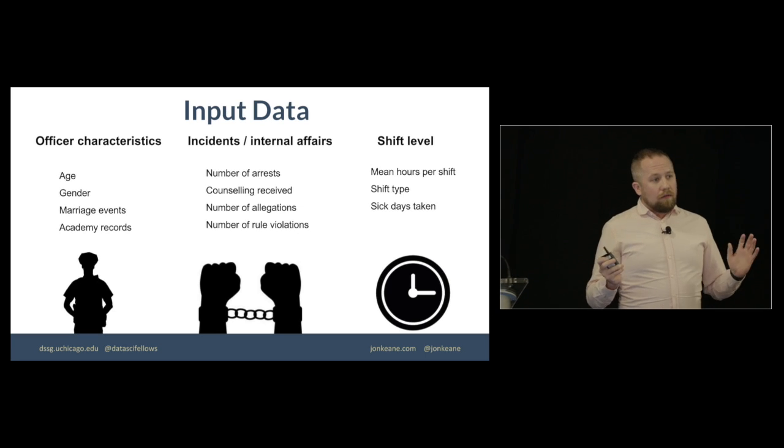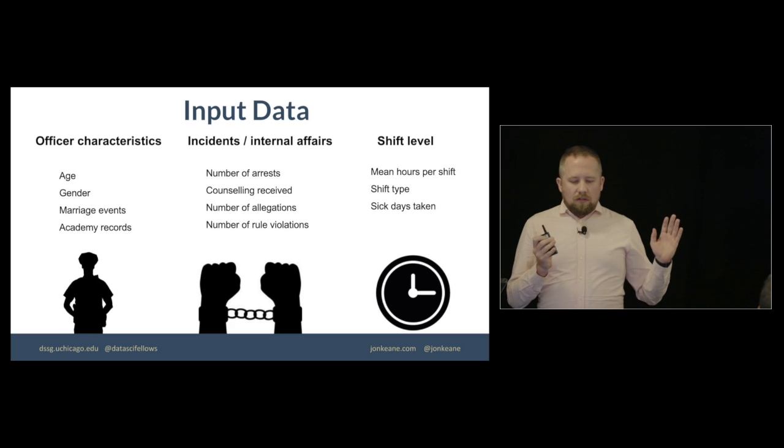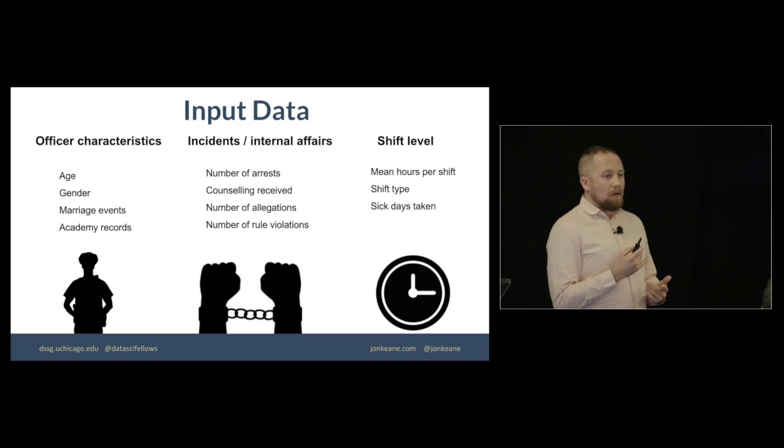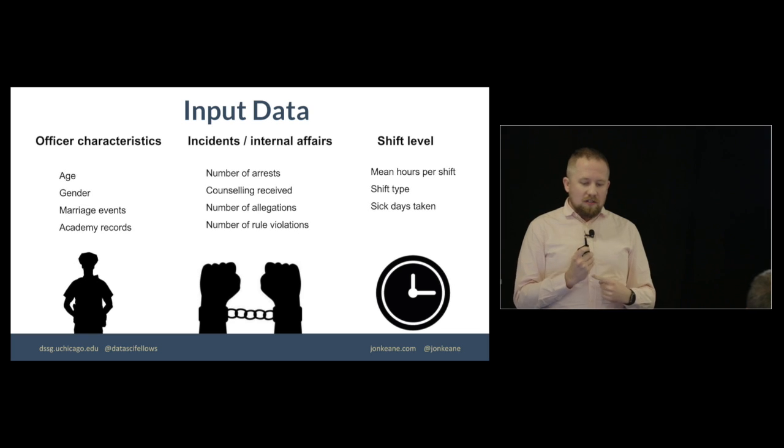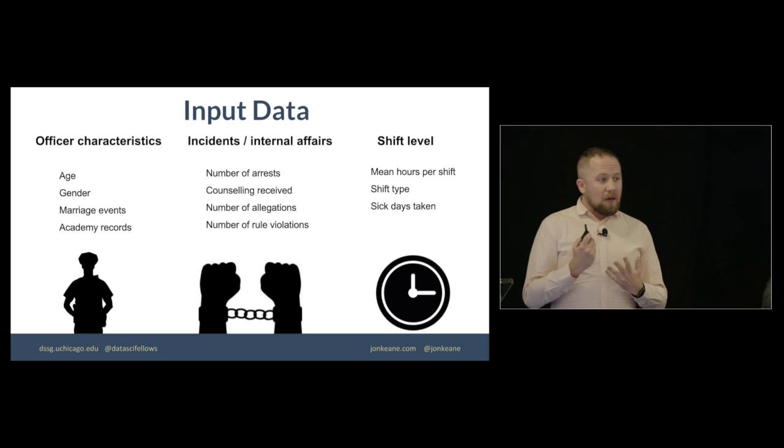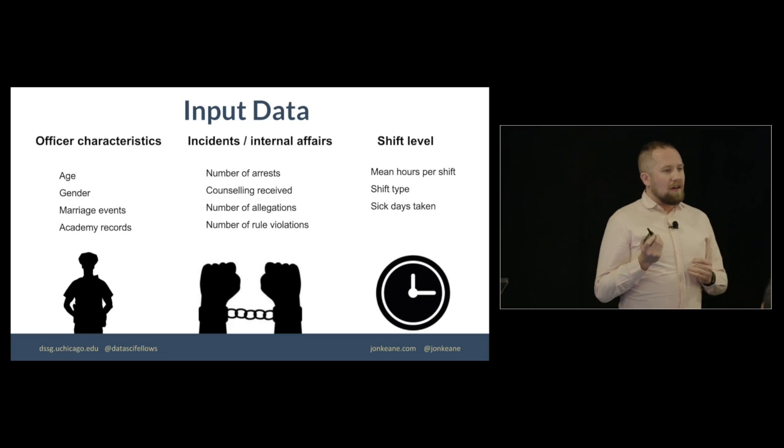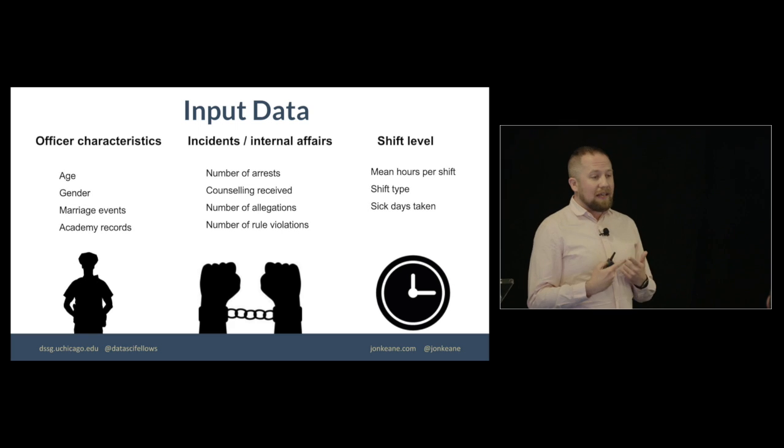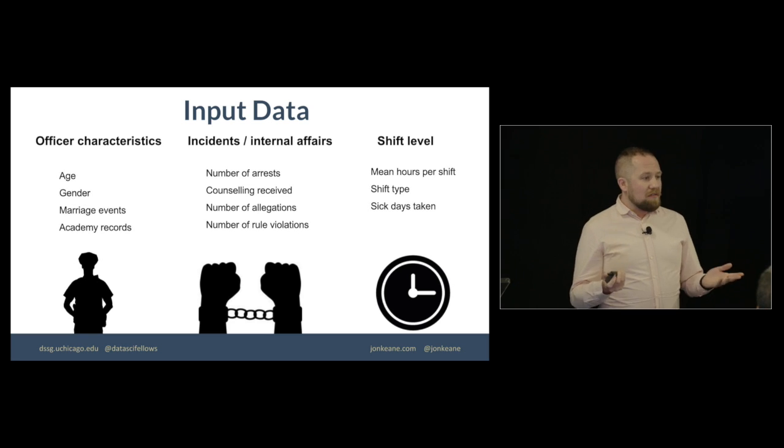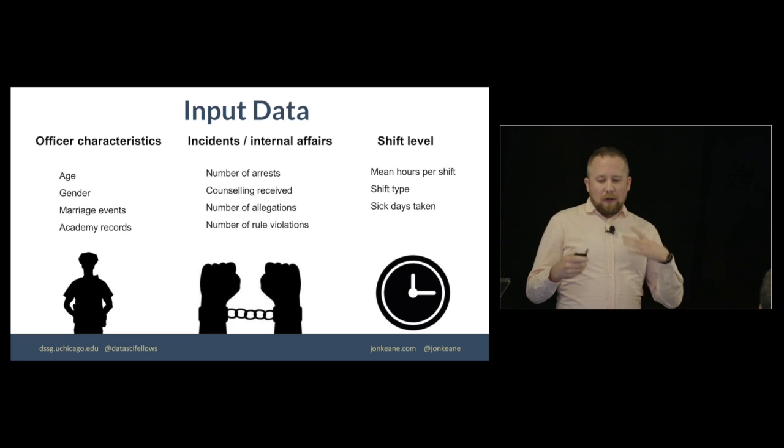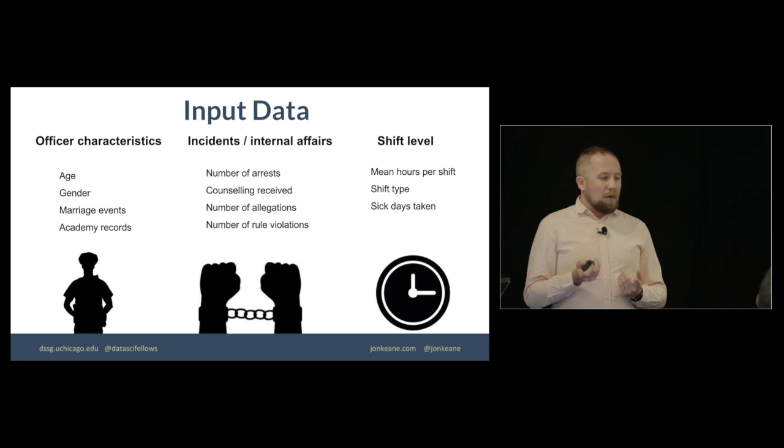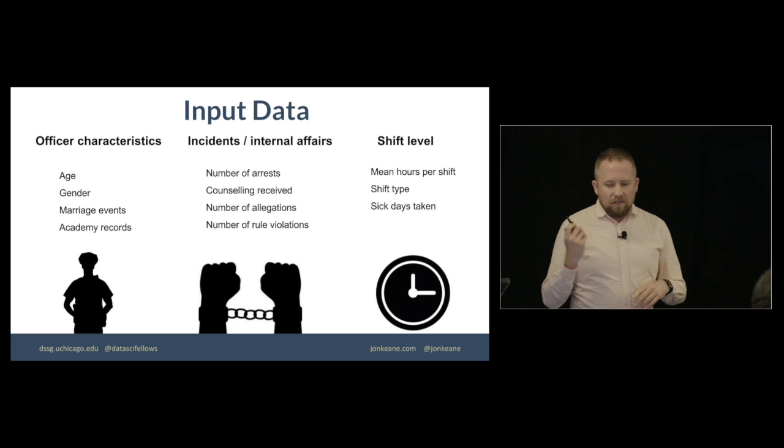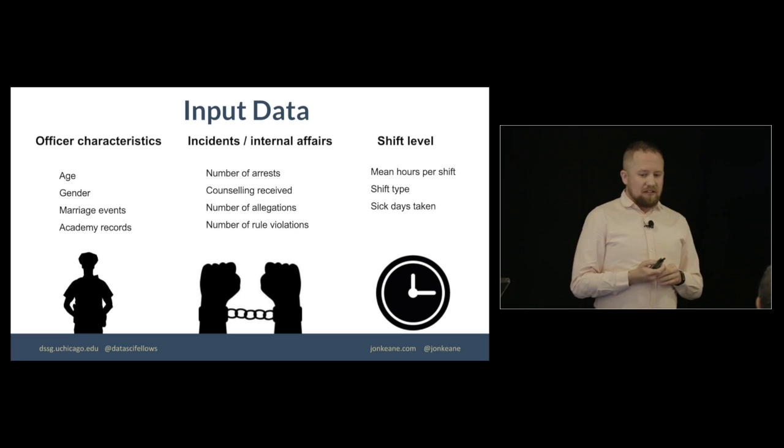So we had a bunch of data from both police departments. We had data generally in three categories. We had information about the officers themselves, so things like age, gender, marriage events, like getting married, getting divorced, and some of their academy records. We also had information from the department itself, so things like incident reports and internal affairs, so things like how many arrests did someone make? How many times have they had allegations lodged against them? How many times have they violated a rule? And finally, we had information just kind of about the general functioning of the police department, so how many hours an officer worked in a shift, what types of shifts there were, how many sick days they took, et cetera.